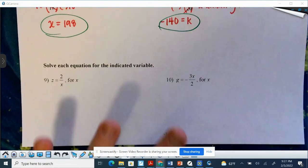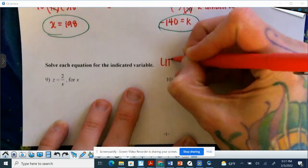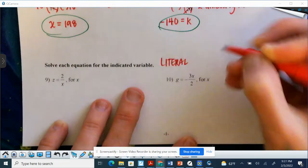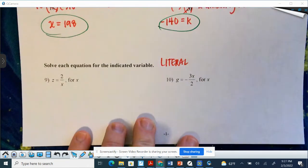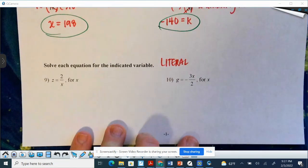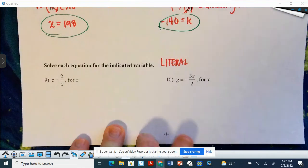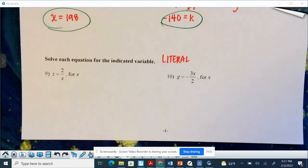So down here number 9 and 10 are literal equations because we have more than one variable. So that means at no point are you going to have x equals or z equals a single number. You can't get rid of other variables.